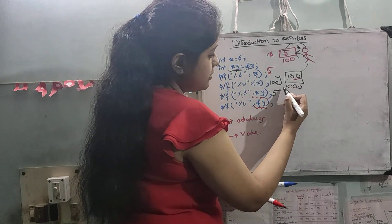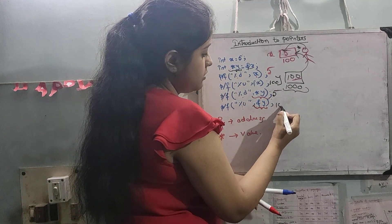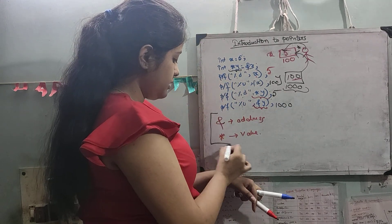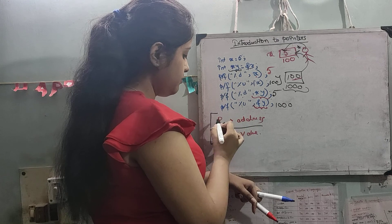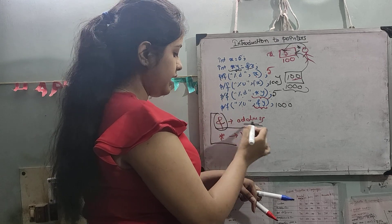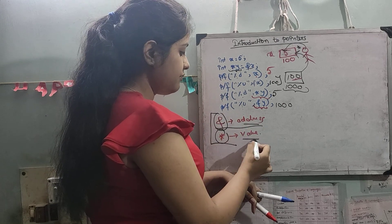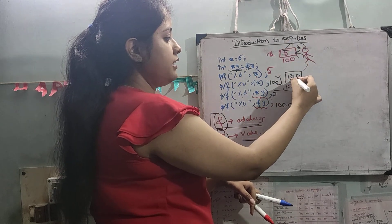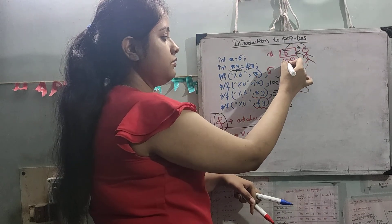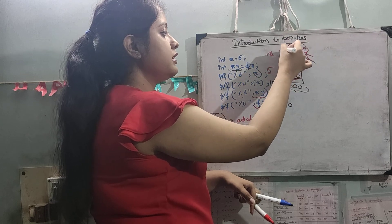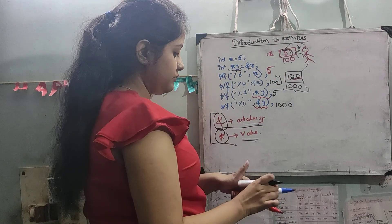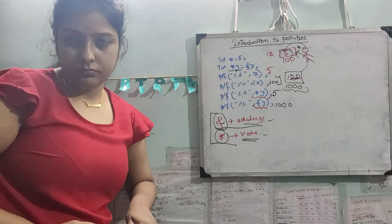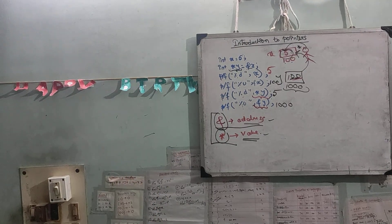The address of y is 1000. So to summarize: address means you are standing outside. If you have 100 as an address, you are standing outside of that location. After applying star, you are going inside and fetching the value.